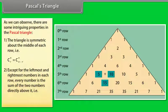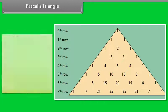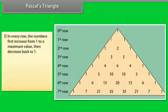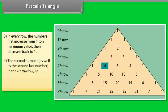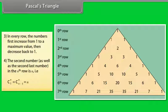Except for the leftmost and rightmost numbers in each row, every number is the sum of the two numbers directly above it. That is, nCr is equal to (n-1)C(r-1) plus (n-1)Cr. In every row, the numbers first increase from 1 to a maximum value, then decrease back to 1. The second number as well as the second last number in the nth row is n. That is, nC1 is equal to nC(n-1) is equal to n.